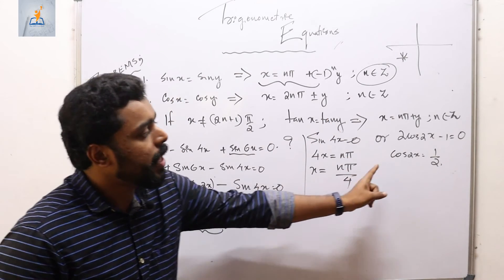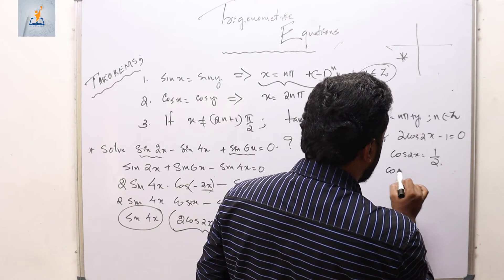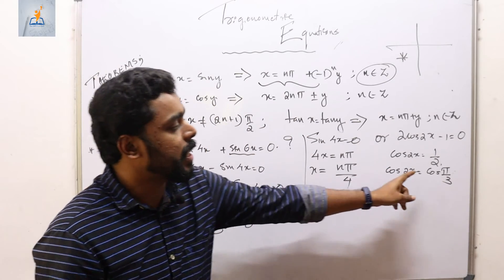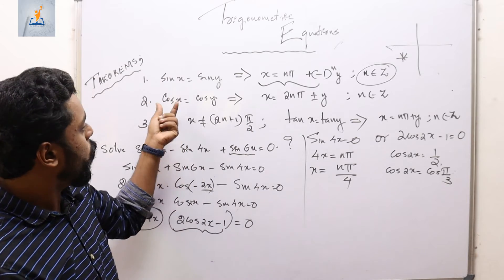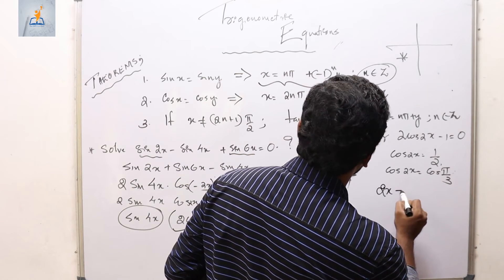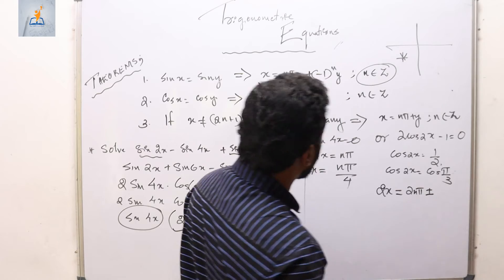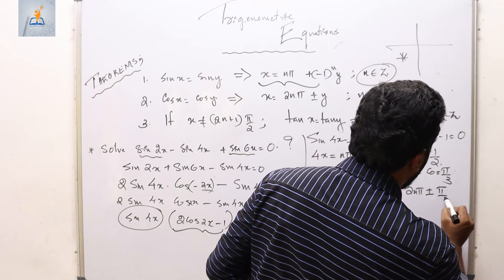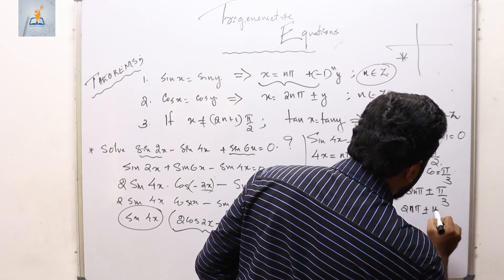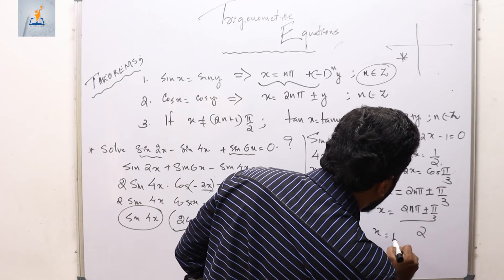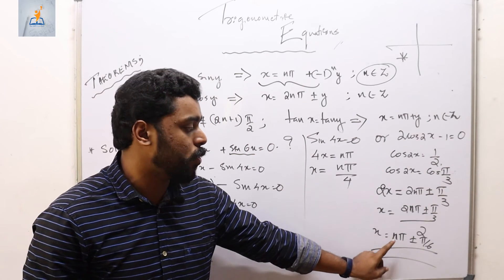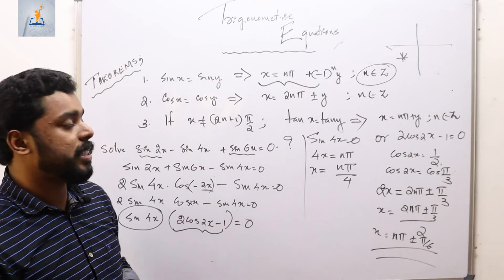For the second case, cos 2x = 1/2 = cos(π/3). Using the cosine general solution theorem, 2x = 2nπ ± π/3, so x = nπ ± π/6. Therefore the two general solutions are x = nπ/4 and x = nπ ± π/6, n ∈ ℤ.